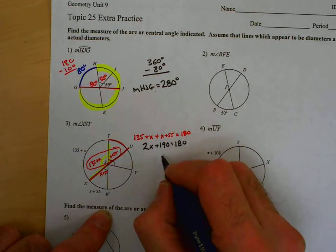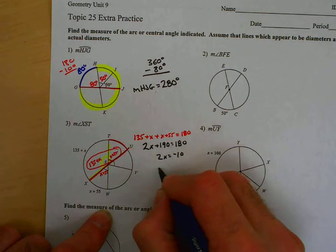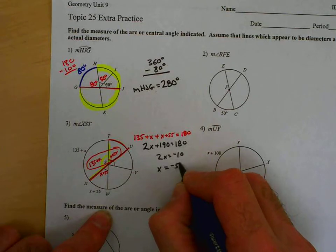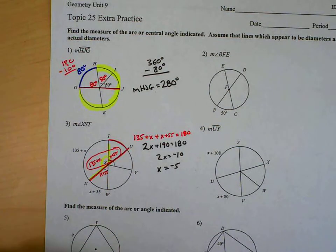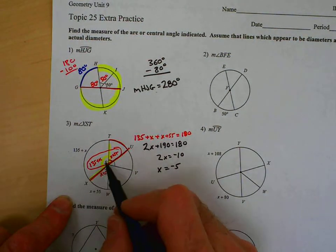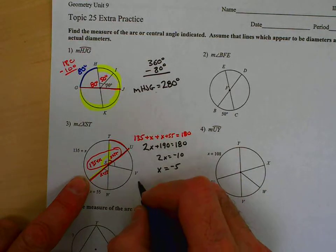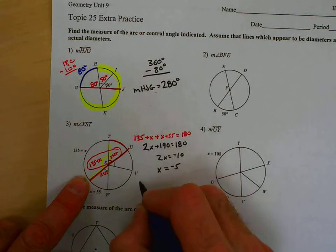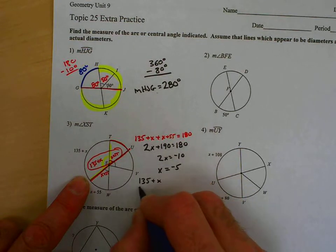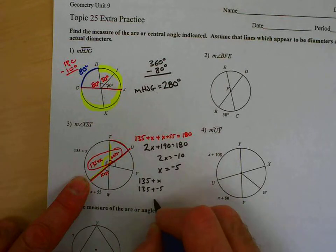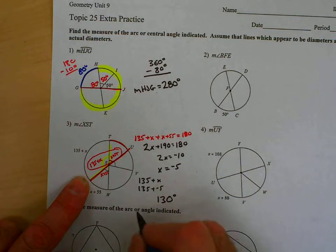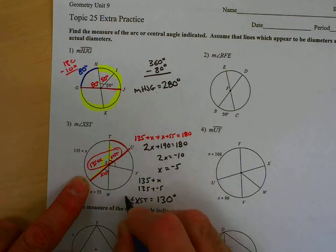Subtract 190 from both sides, 2X equals negative 10, so X equals negative 5. That's my X. They didn't ask me for X. They asked me for the measure of XST, which I said is the same as this arc, 135 plus X. So, 135 plus X would be 135 plus a negative 5, which is 130. So, the measure of angle XST is equal to 130.